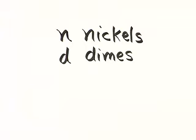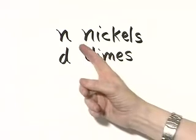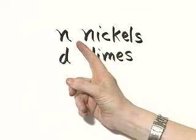Let's write an expression for the total amount of money if you have n nickels and d dimes. Remember, n stands for the number of nickels. If you want to know how much money you have in nickels, you would multiply n by the value of a nickel.